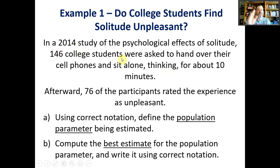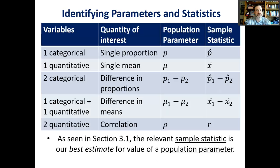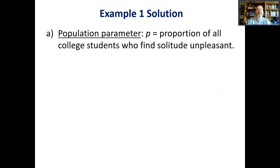We have 146 college students as our sample, and 76 participants rated the experience as unpleasant. The researchers, after participants sat alone for 10 minutes, had them fill out a questionnaire rating the experience — choosing from options like unpleasant or pleasant. The fact that they chose from a list of options means this is a categorical variable. So we have one categorical variable and the population is all college students. Looking at the chart, that means we're interested in a proportion, and the population parameter is P — the proportion of all college students who find solitude unpleasant.